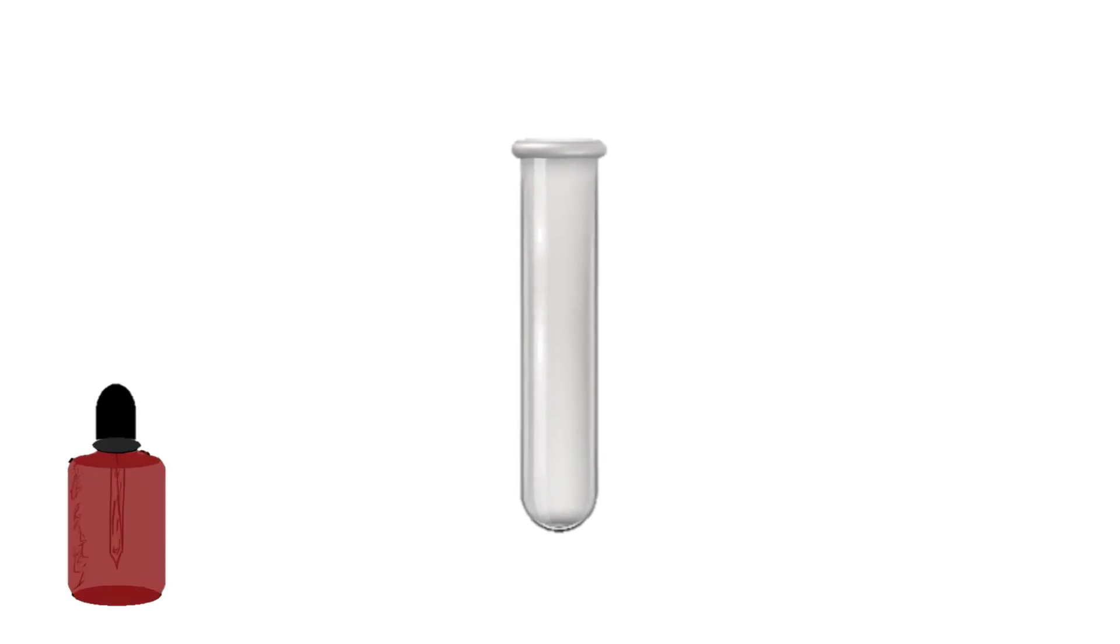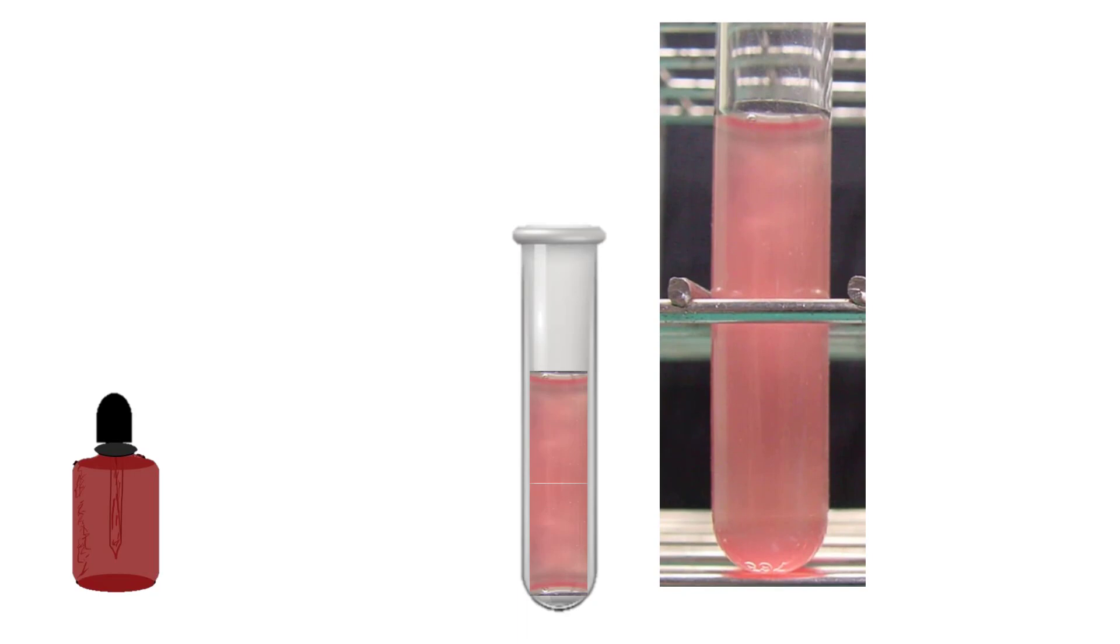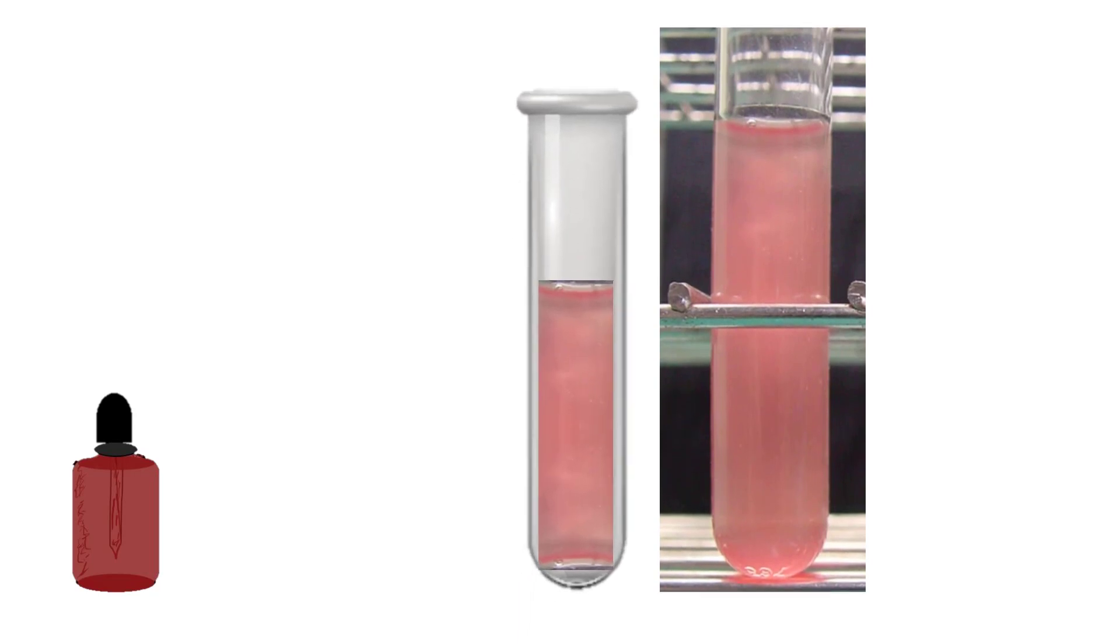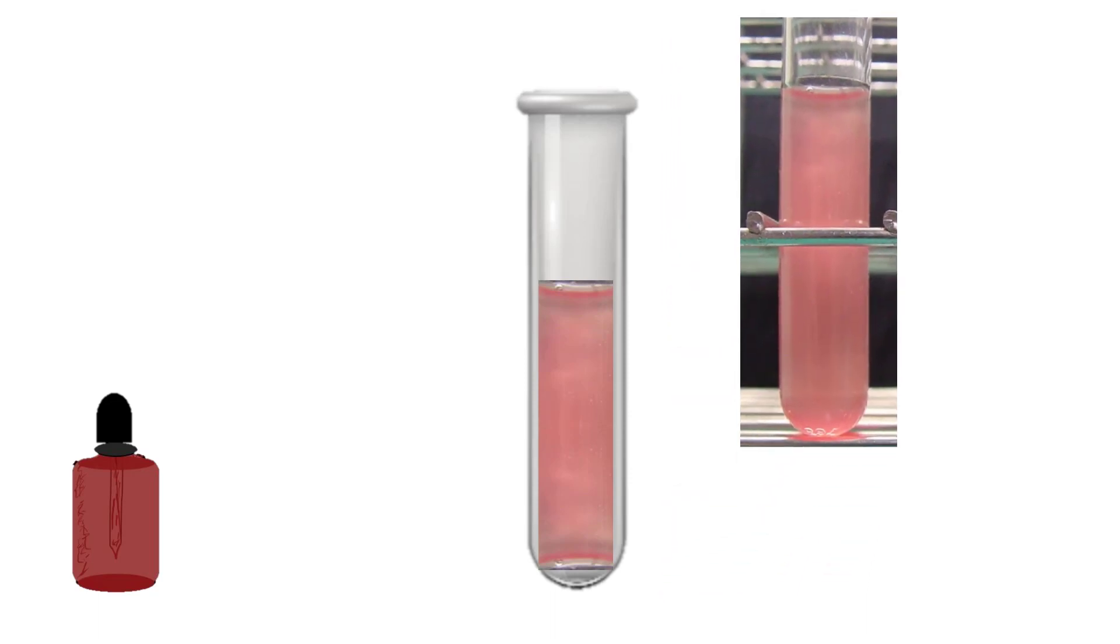When we take some blood cells and add them to an isotonic solution of 0.9%, we can see that the solution remains cloudy. The cells have not undergone lysis or cremation. The solution looks cloudy because the red blood cells are still intact and diffuse light as it passes through the test tube.